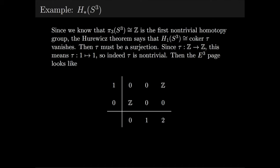Since we know that π₃ of S³, which is the integers, is the first non-trivial homotopy group, the Hurewicz theorem says that H₁ of S³, which actually will be isomorphic to the cokernel of our transgression, must vanish. Therefore, τ must be a surjection, and since τ is an endomorphism of the integers, this means that τ sends 1 to 1, so indeed τ is non-trivial, and in fact it's an isomorphism.